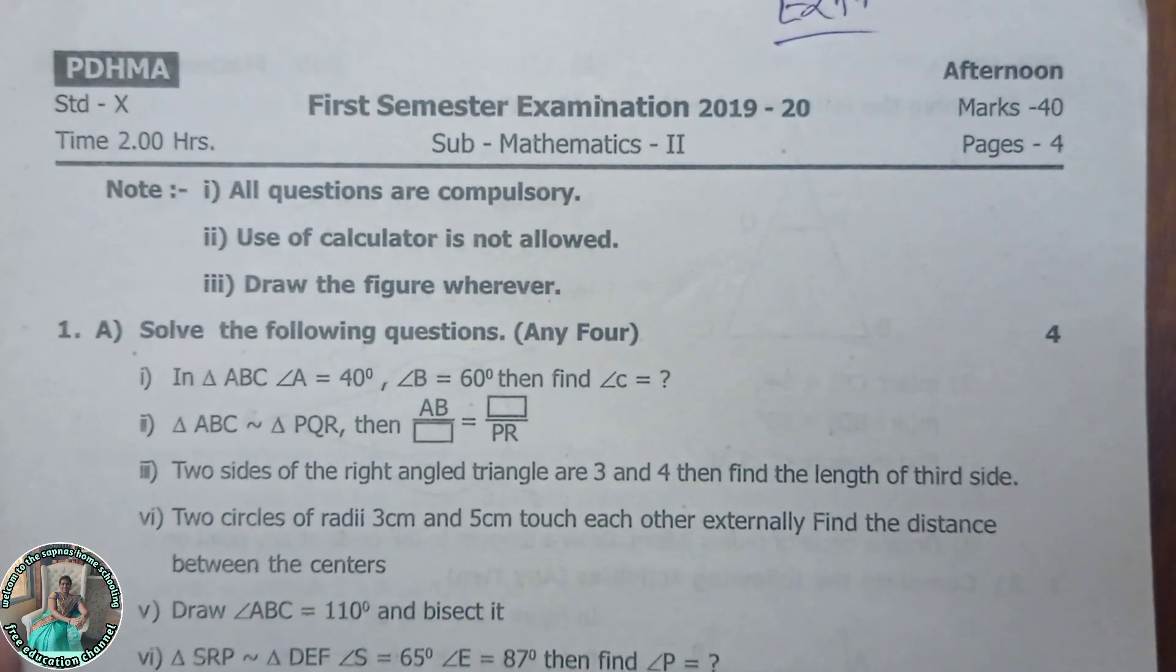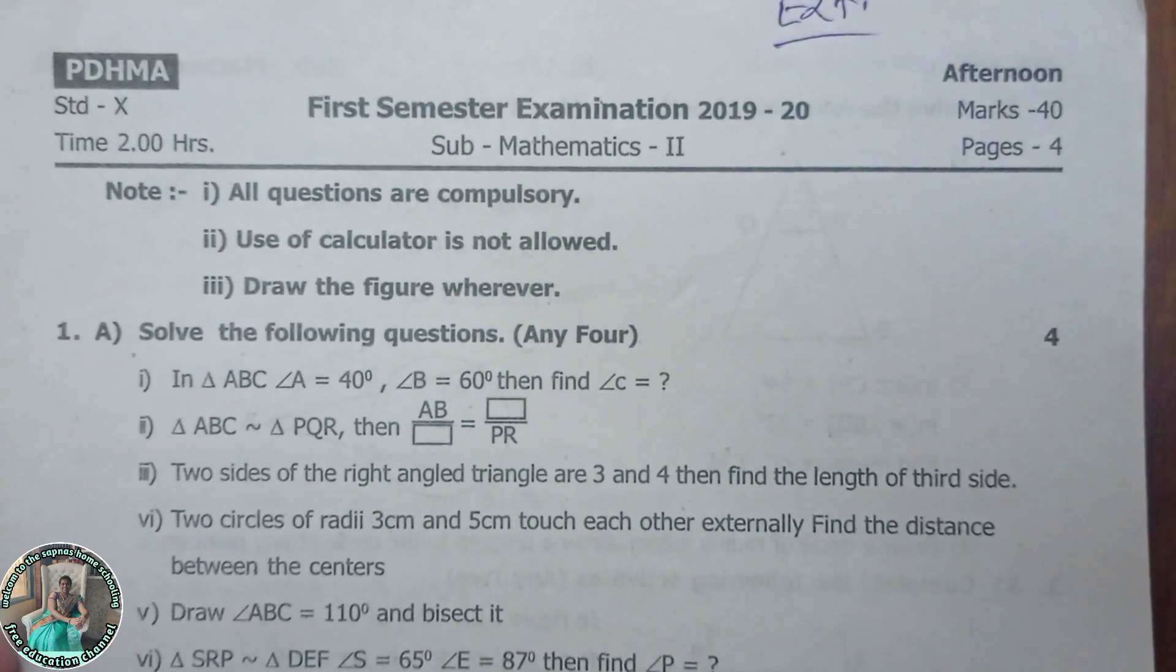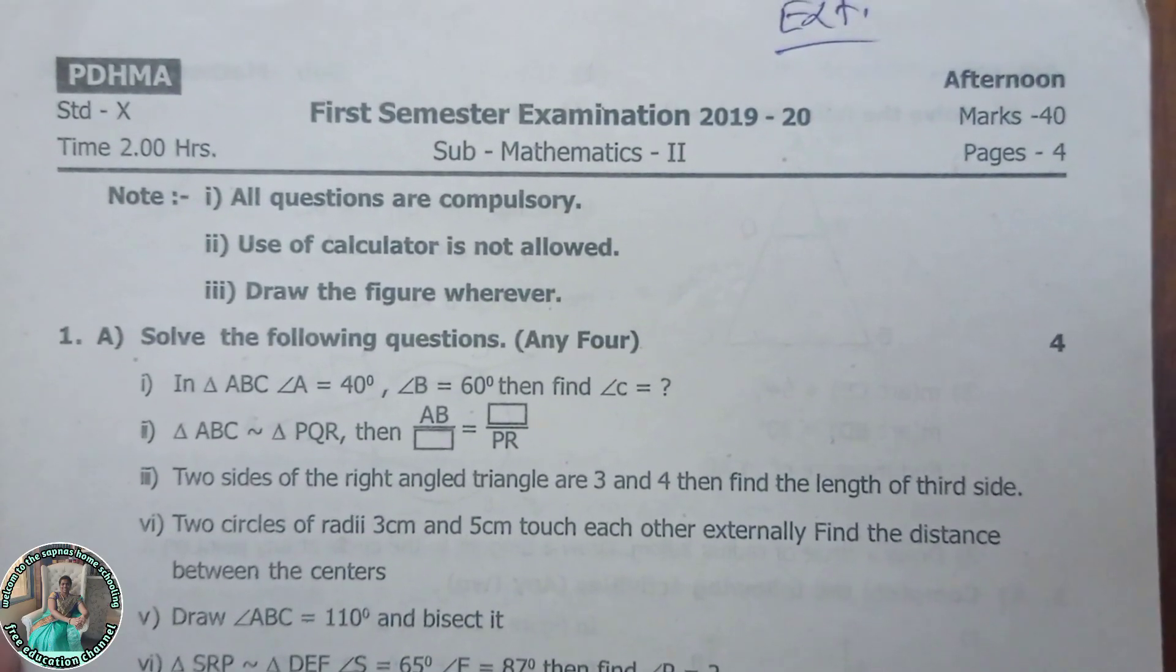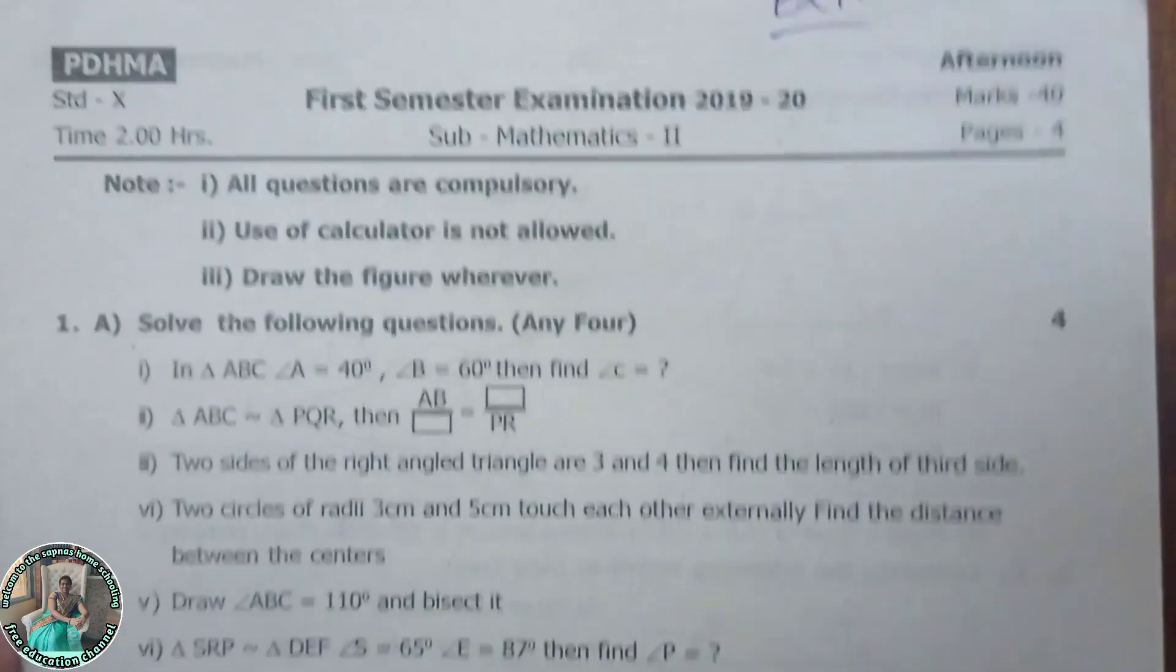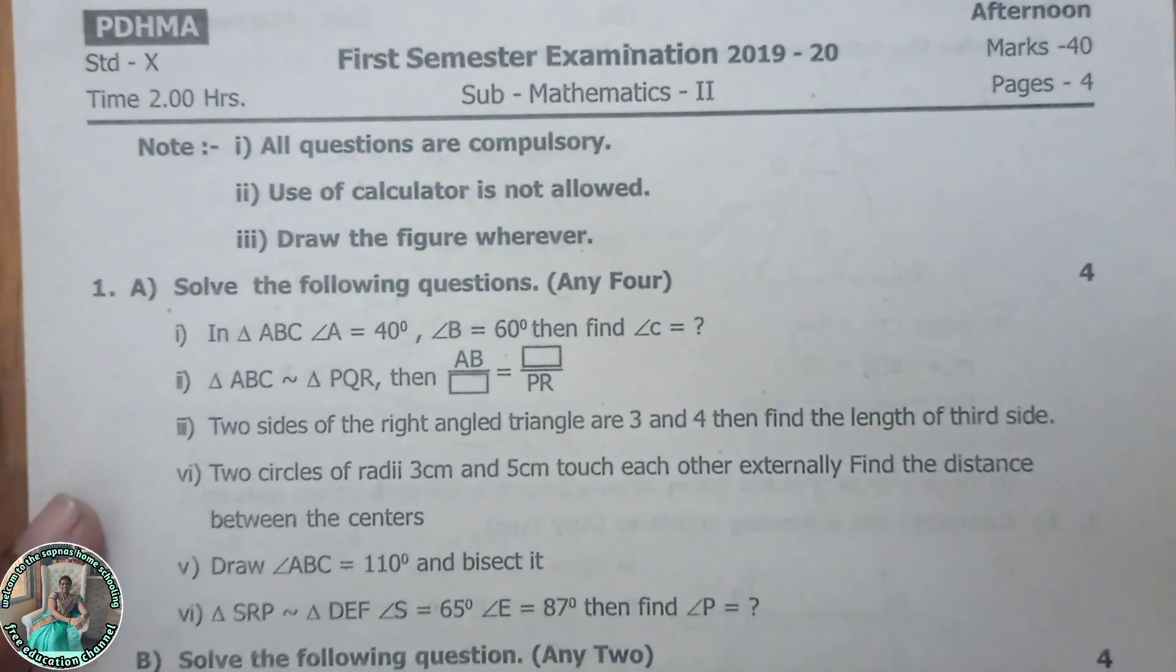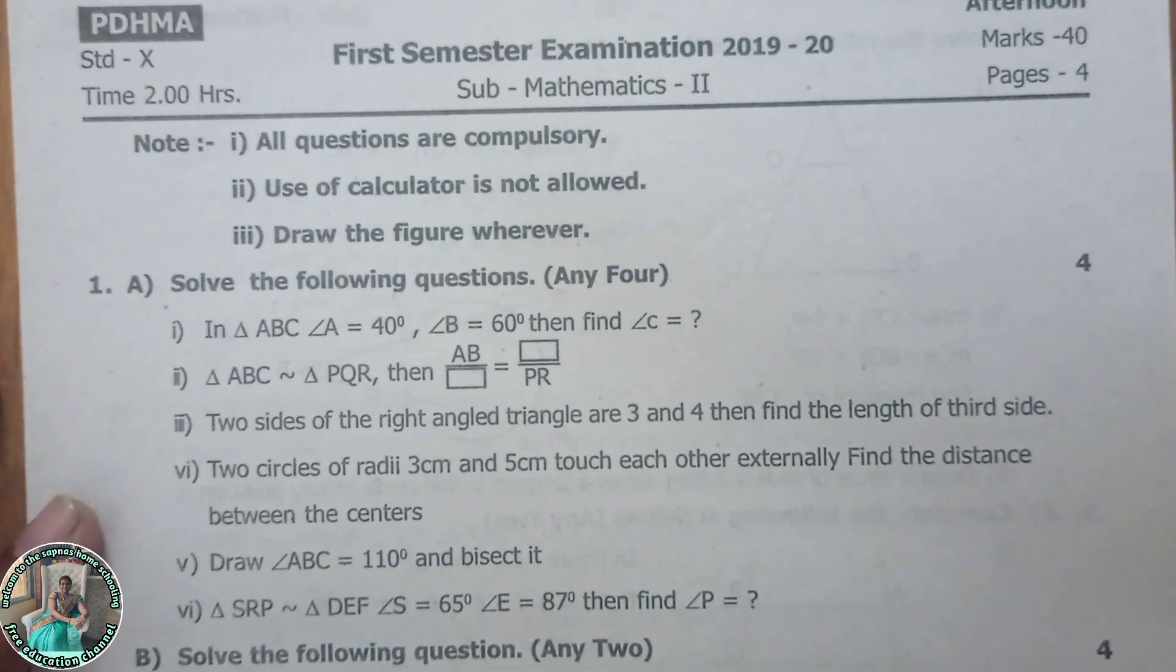Hello friends, welcome to Sapna's Homeschooling YouTube channel. This is the First Semester Examination 2019-20 paper, the subject is Mathematics Second Part with 40 marks. There are four pages in this paper. Basically, this paper is for your practice and with the help of this paper you can understand what is the paper pattern and how to solve all the questions.